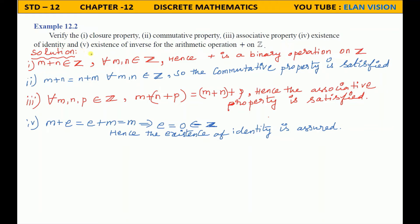Existence of identity: from the given set, take one element — for example 3. Add a number such that the same number comes back; that element is the identity element. 3 plus 0 is 3, and 0 plus 3 is 3. Therefore 0 is the identity element, and 0 belongs to the set Z.